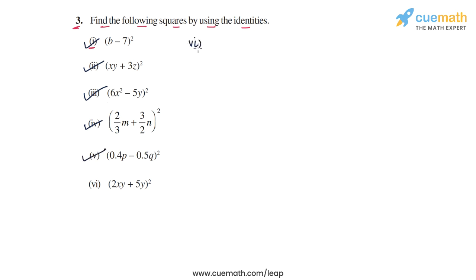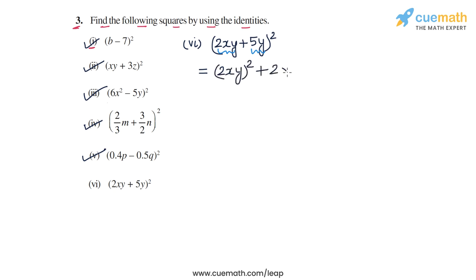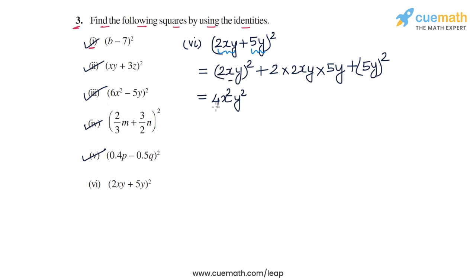Finally, we come to part 6, in which we have to calculate 2xy plus 5y whole square. This expression is of the form a plus b whole square, where a is 2xy and b is 5y. We expand a plus b whole square as a squared plus 2ab plus b squared. So we get 2xy whole square plus 2 times 2xy times 5y plus 5y whole square. Now, 2xy whole square will be 4x squared y squared, since each term in the product gets squared.